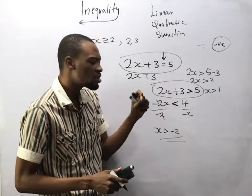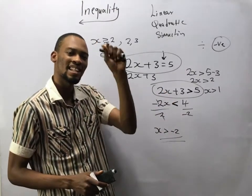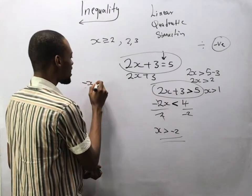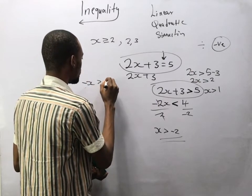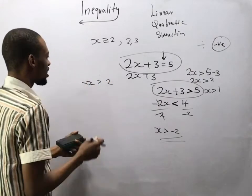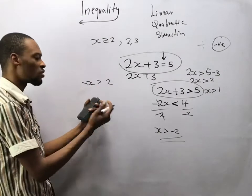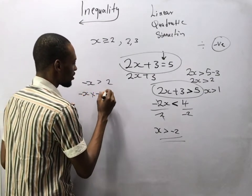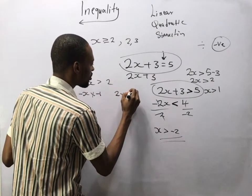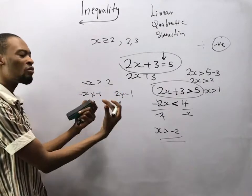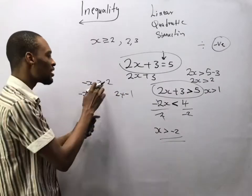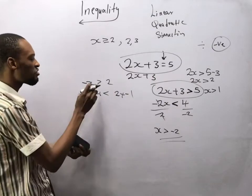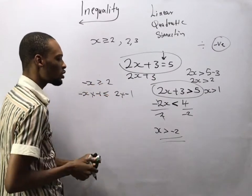Anytime you multiply both sides by a negative number, the sign also changes. For example, if I say minus s is greater than 2 and I multiply both sides by minus 1, since we are multiplying both sides by a negative number, the sign changes. Greater than becomes lesser than, and if you had greater than or equal to it becomes lesser than or equal to.